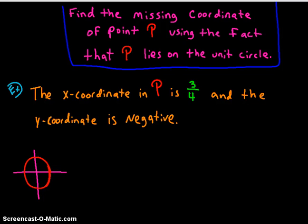So in this example, we're going to find the missing coordinate of point P using the fact that P lies on the unit circle.